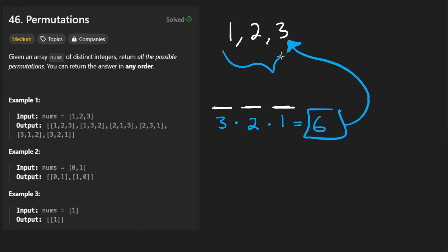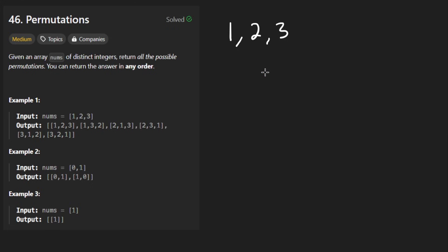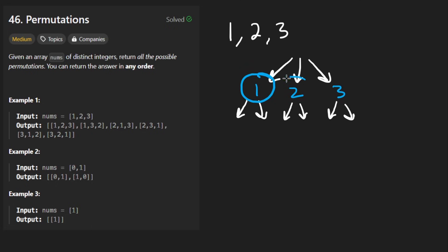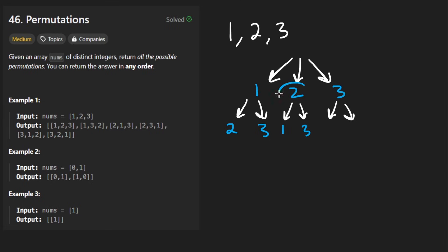In order to visualize it, let's draw a decision tree. For the first choice, we can choose among three elements: one, two, or three. Regardless of which path we take, we're going to have two choices. Here we can have either a two or a three — we can't have a one because we already picked it. Here we can have a one or a three because we can't have two. Here we can have a one or a two, but not a three.